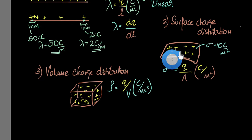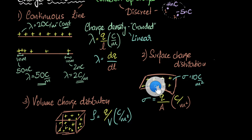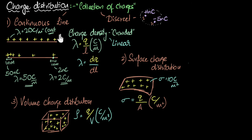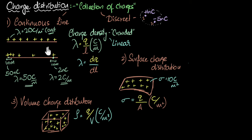To put it all together: continuous charge distribution means charges are spread out continuously — over a line, a surface, or a volume. One of the most important quantities is charge density, which tells you how crowded the charges are. If the value is constant, it's a uniform distribution. If the value varies from point to point, you have a non-uniform distribution, where some regions have more crowdedness than others.